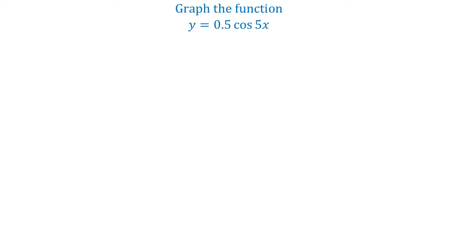In this video, we will graph the function y equals 0.5 cosine of 5x. This function has the form y equals a cosine of bx. In our function, a is 0.5 and b is 5.